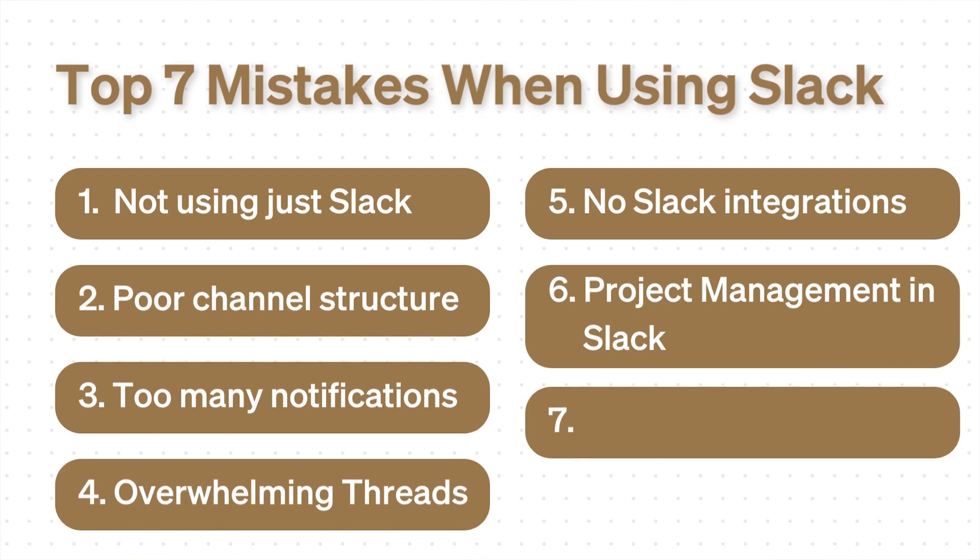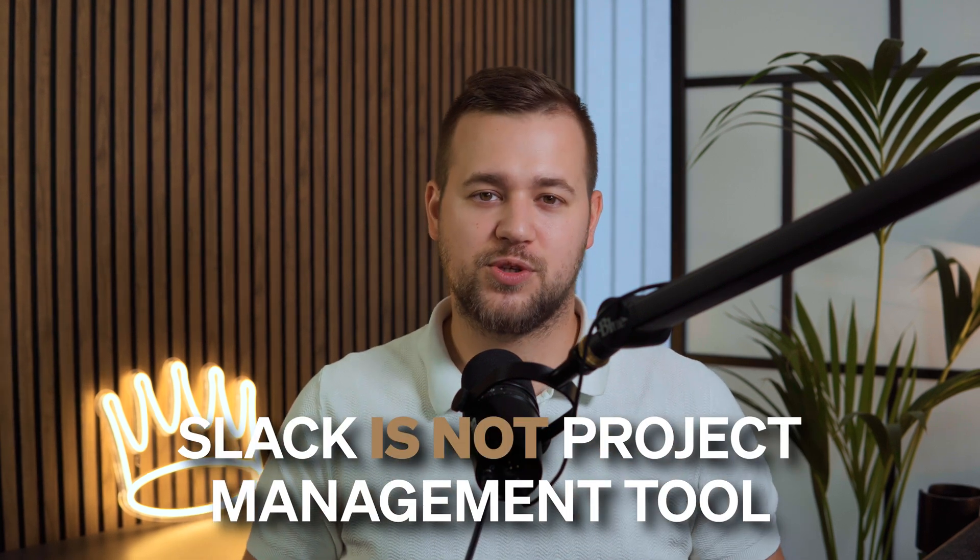Mistake number six: using Slack as a project management tool. This builds on the previous point — when people don't use project management tools and don't use integrations, they organically start using Slack as its own project management tool. But even though Slack is a great communications tool, probably the best one, it's not built to be a project management tool. I've seen this mistake happen over and over again with companies using Slack to assign tasks to people, and what ends up happening is channels get missed, messages get lost, and clients end up leaving — costing companies tens of thousands of dollars. Project management tools exist for a reason, so make sure to use them. You can integrate them with Slack to automate notifications, but don't make the mistake of using Slack as its own project management tool.